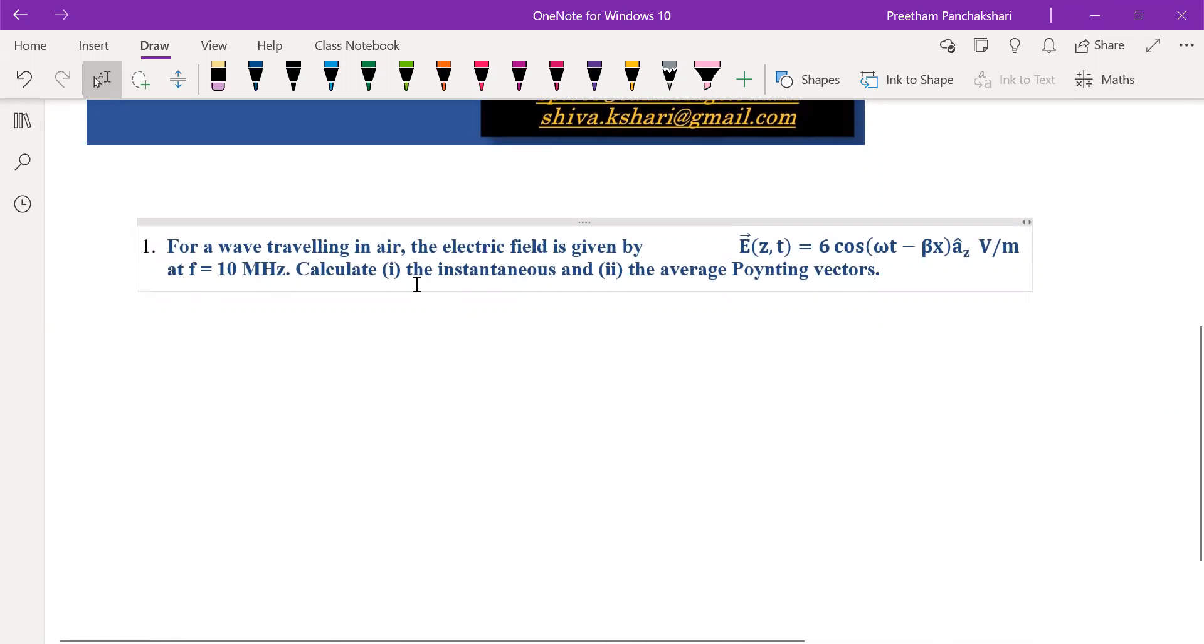Here is a problem. For a wave travelling in air, the electric field is defined by this equation at 10 MHz. We have to calculate the instantaneous Poynting vector and average Poynting vector.